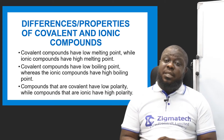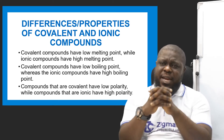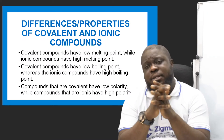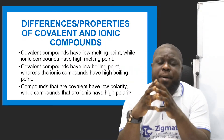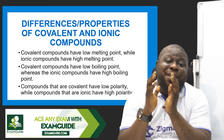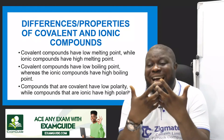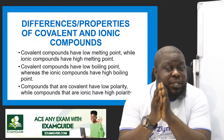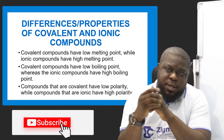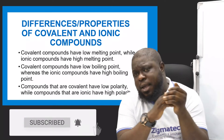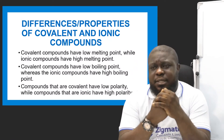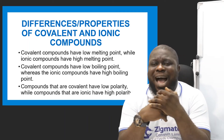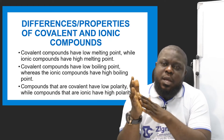Similarly, covalent compounds have a low boiling point, whereas ionic compounds have a high boiling point. Everything about ionic compounds is high because of the charges. Covalent compounds have a very low boiling point because they are electrically neutral, so their boiling point will not be as high as that of the ionic compounds.